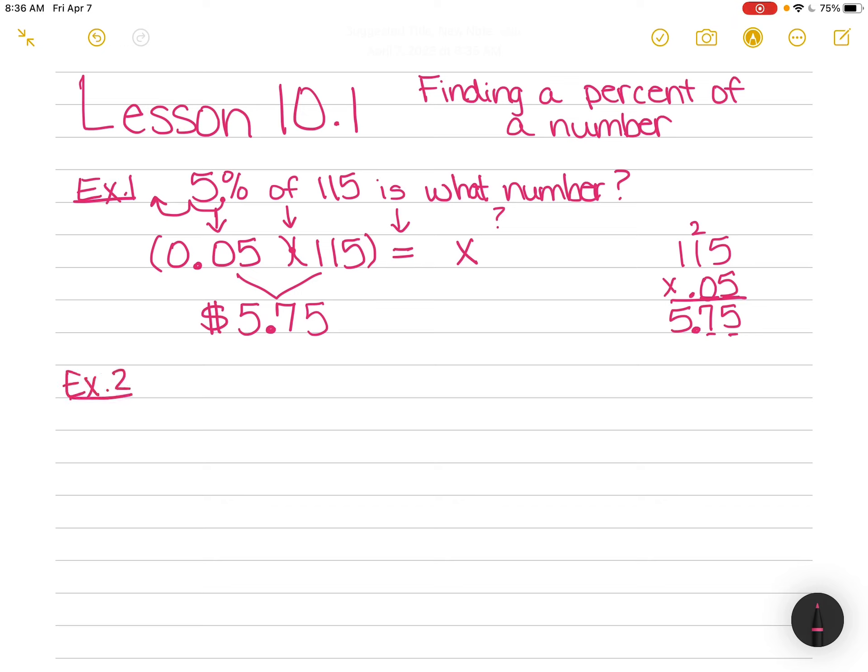Example two says, solve 12.5% of 75. On this one, it says write an equation. 12 and a half percent of 75. First of all, 12.5 is written as a fraction, and we want this in decimal. So I'm going to rewrite this to be a decimal. How do we write half as a decimal? 0.5, right?